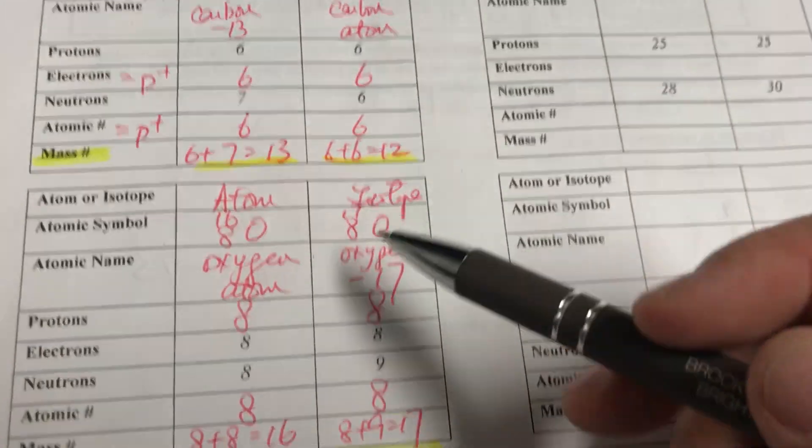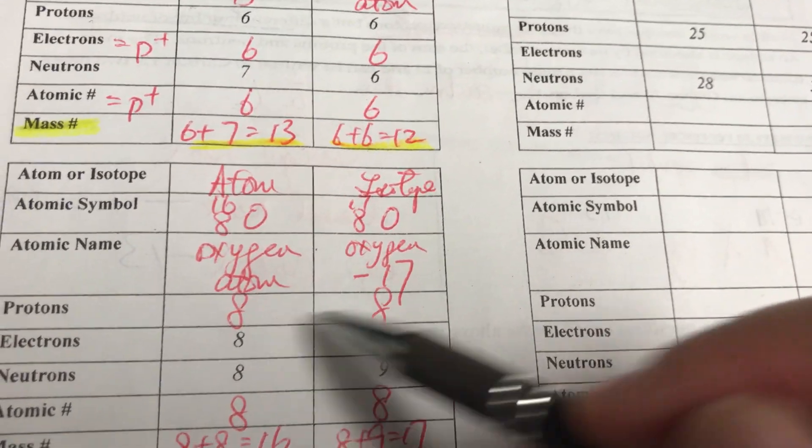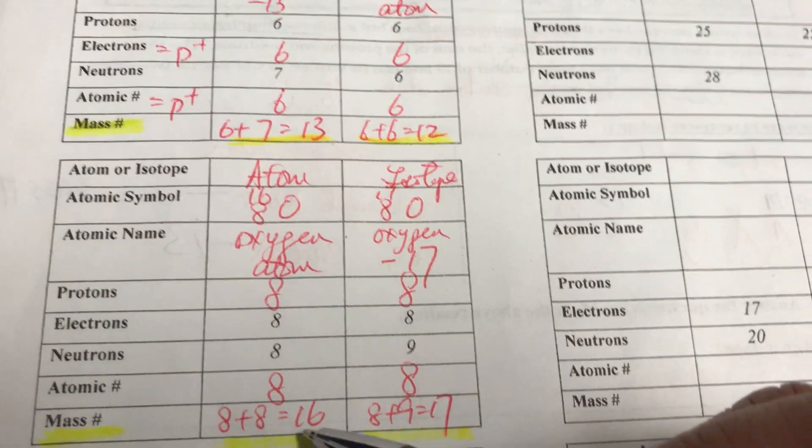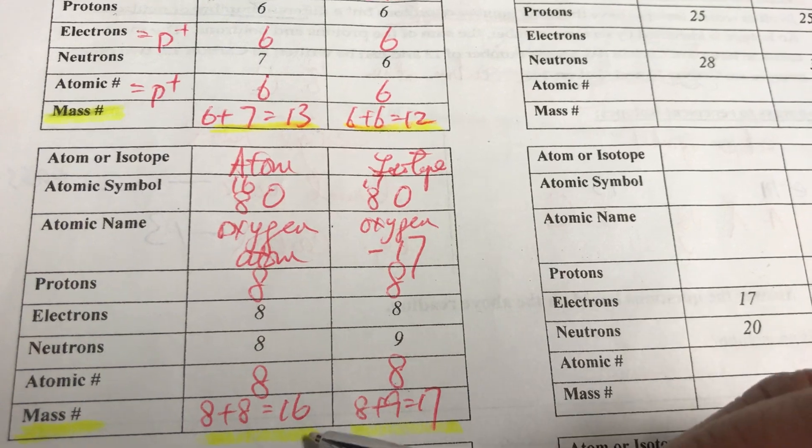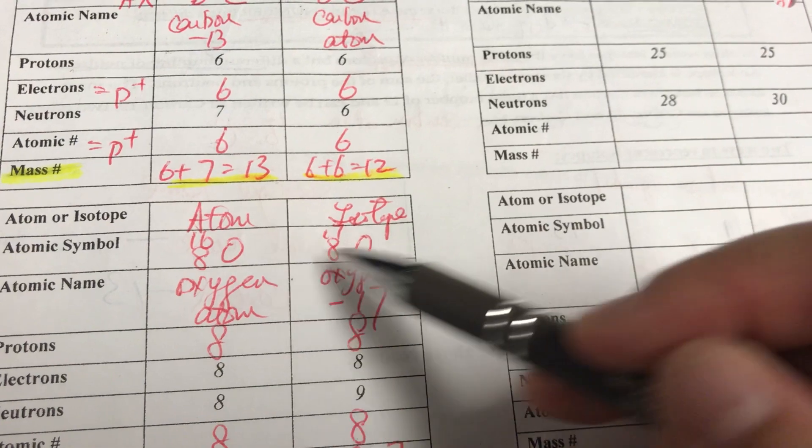All right, let's look at the second question. We're given electrons and neutrons. So electrons, same thing as protons, will be 8 and 8. Atomic number also 8. Now mass number will be, you add up the proton and neutron together, 16 and 17. Show me the map. And again, you write down the mass.